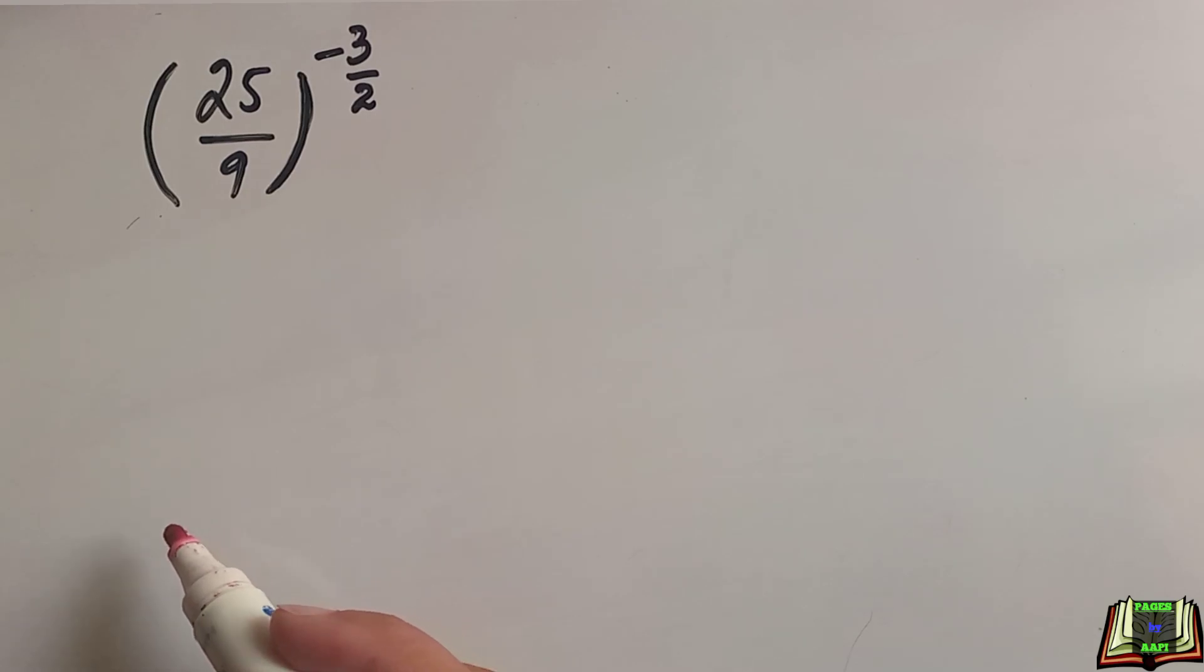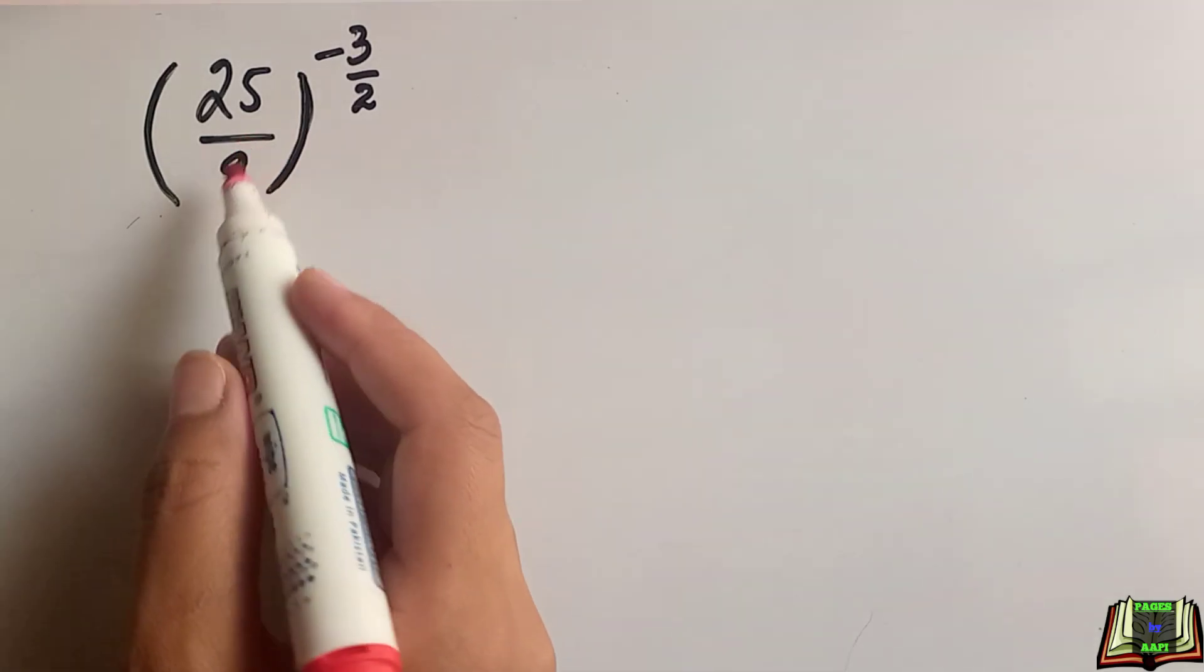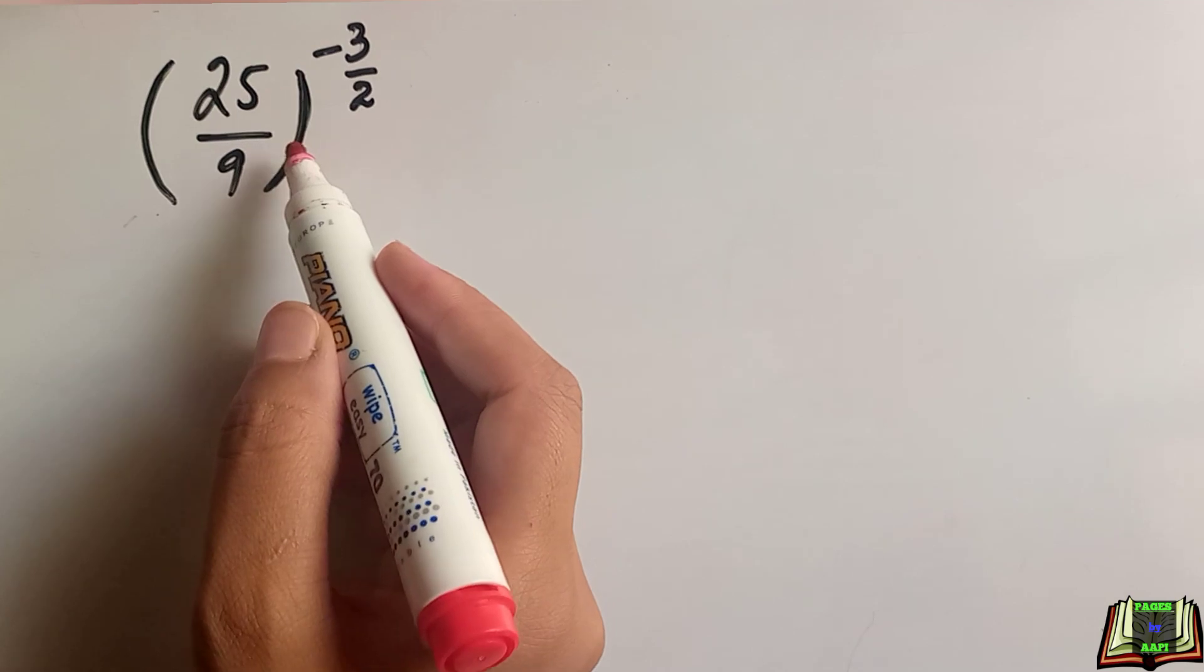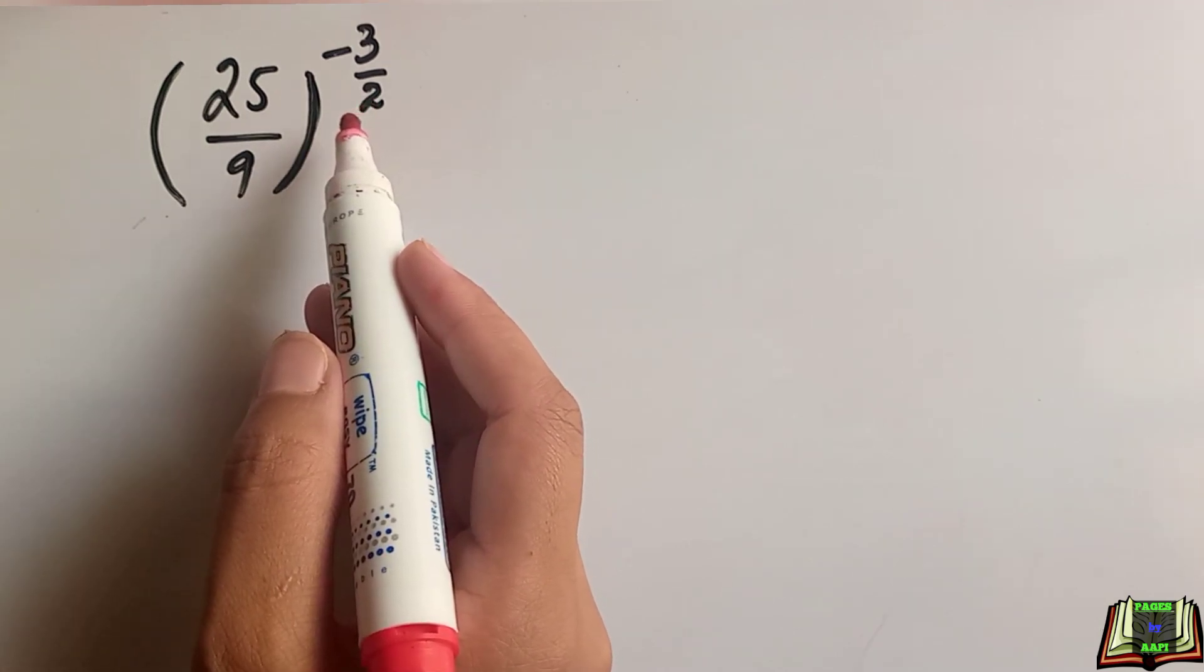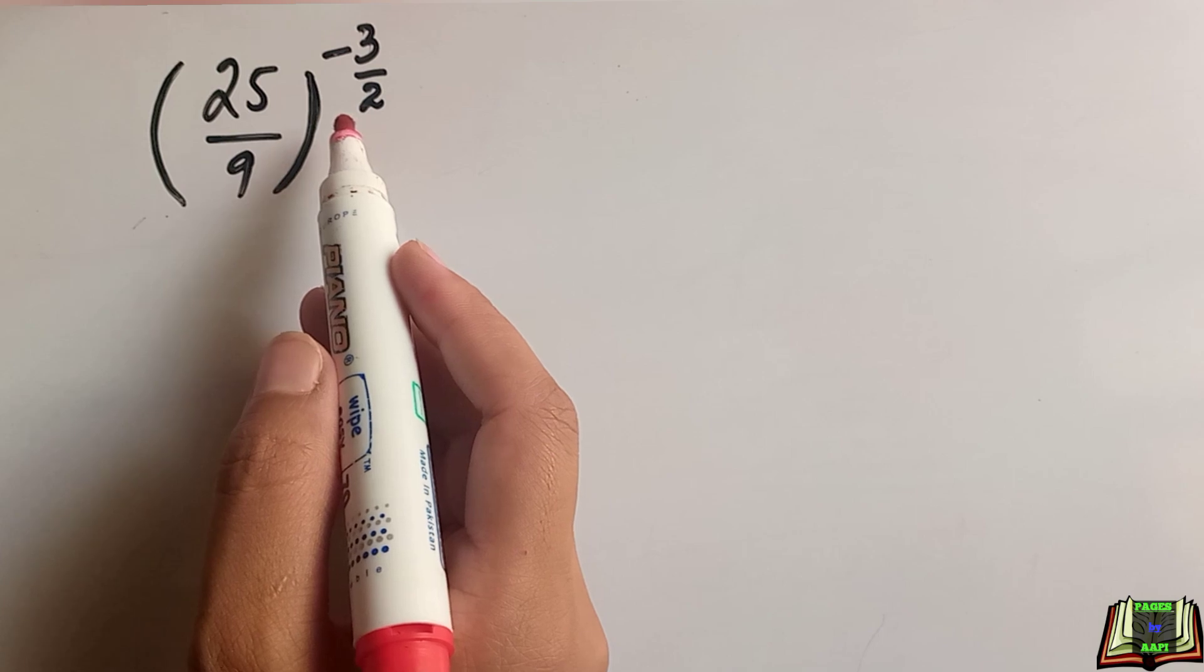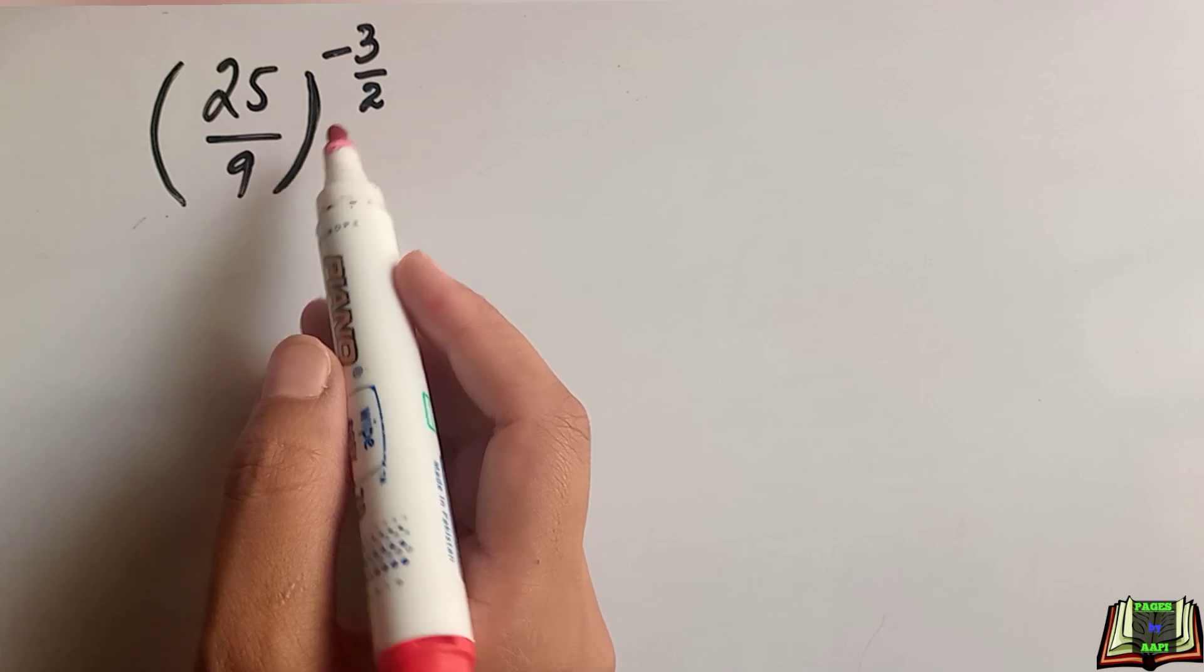Welcome back all of you. Let's evaluate 25 by 9 to the power minus 3 by 2. This is a very beautiful rational expression involving exponent and we are going to write this expression in its simplest form.